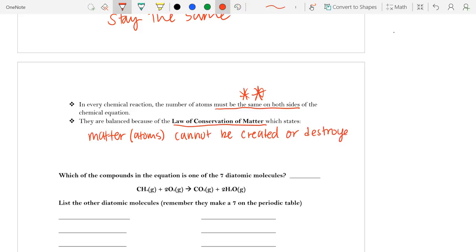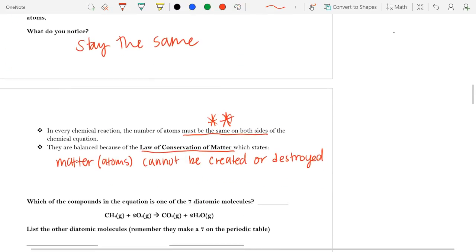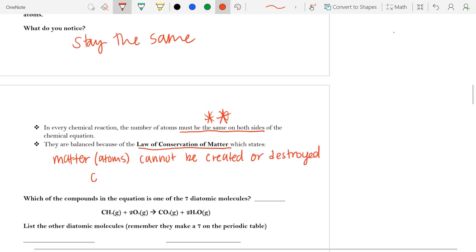But we do know the only thing that can happen is that atoms can be rearranged. So let's add that to our definition, so matter, or atoms, cannot be created or destroyed. It can only be rearranged.